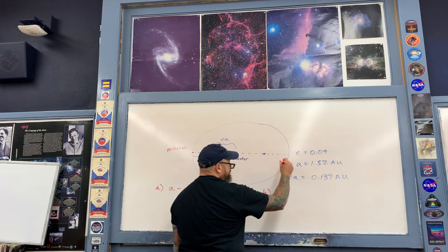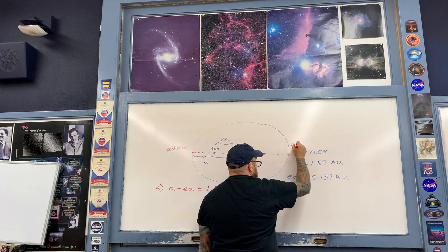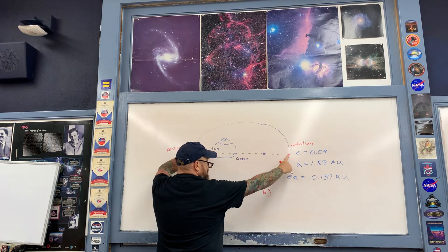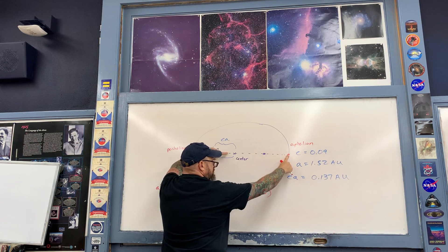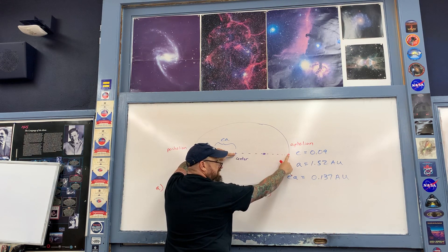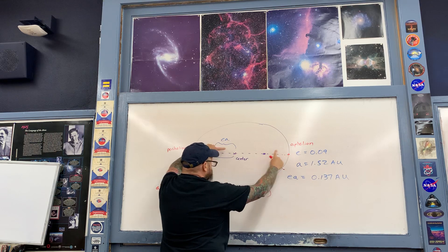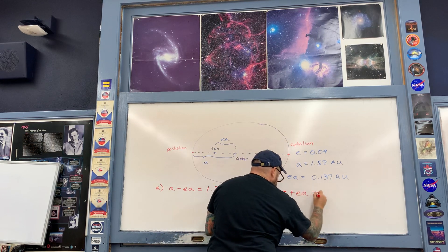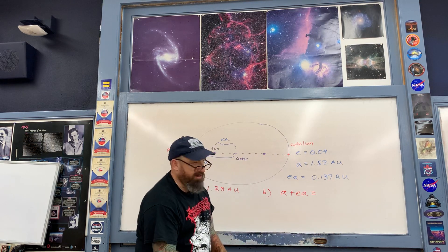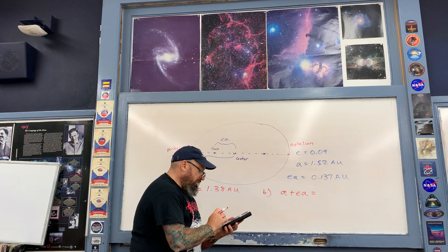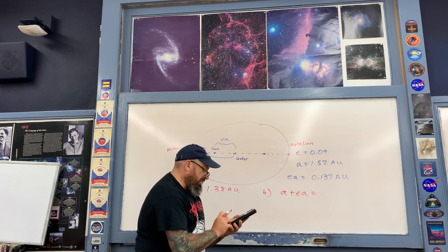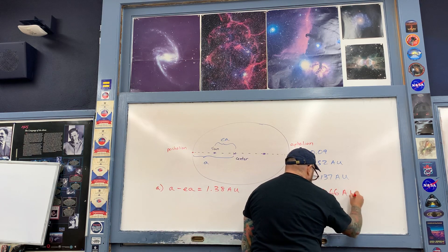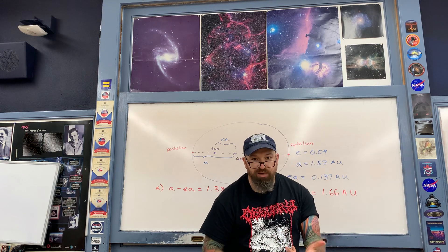For part B, we look at the aphelion distance — when the planet is at its furthest point from the Sun. That distance equals a plus ea, because you add the offset ea to the semi-major axis a. So I take 1.52 plus 0.137, which rounds to about 1.66 AU. That's how you find the perihelion and aphelion distances.